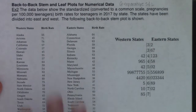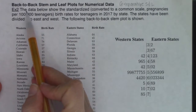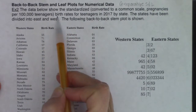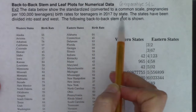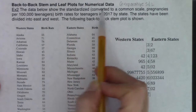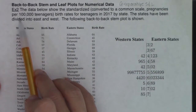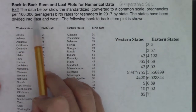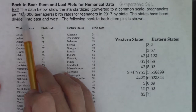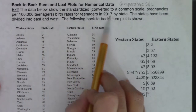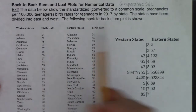As we take a look at this, I want to ask: what is the variable in this problem? It says the data below show the standardized birth rates for teenagers in 2017 by state. When I say standardized, it's converted to a common scale. Pregnancies are shown per 100,000 teenagers.